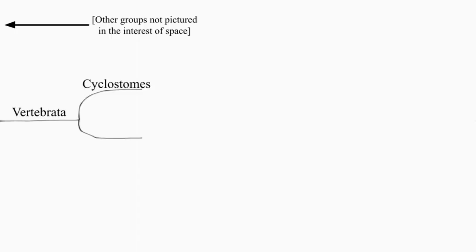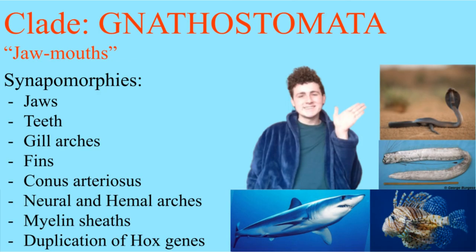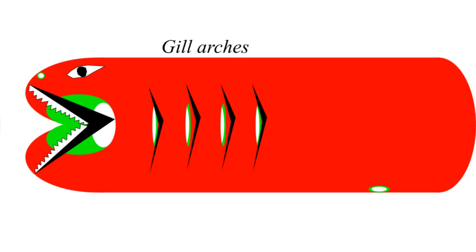Vertebrata is when things really kick off. They divide up into the circle mouths and jaw mouths. The cyclostomes are the boring ones, and the gnathostomes are very exciting. They have, in order of most obvious, jaws with teeth, teeth, jaws without teeth, but that sometimes do have teeth, fins...